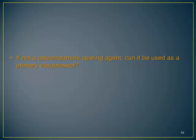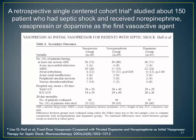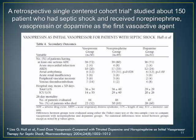Can vasopressin be used as a primary agent rather than a catecholamine-sparing agent? There is not a lot of data on that, but there is one retrospective single-center study published in 2004. About 150 patients with septic shock received either norepinephrine, vasopressin, or dopamine — divided into three groups. There was no significant difference in 28-day mortality: 52%, 65%, and 60% respectively, with no statistical difference.